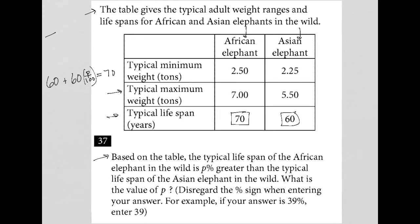I'm using the strategy: translate word problem. I'm reading the table and the information provided in the question, and this is what I come up with. This is the typical lifespan of the Asian elephant, but when you add an additional p percent of that lifespan, which is 60 times p over 100, then you get the typical lifespan of the African elephant.